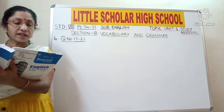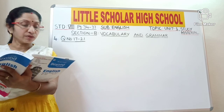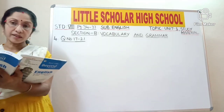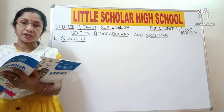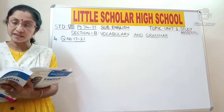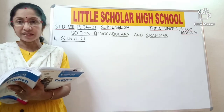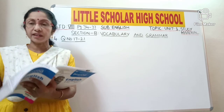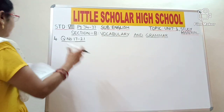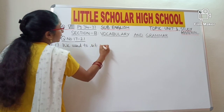Question number 17: rewrite the underlined expression after correcting it. 'We used sit in the same row' — a preposition is missing. Whenever you want to talk about past habits, we use the expression 'used to'. So it should be corrected and written as 'We used to sit in the same row'.